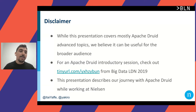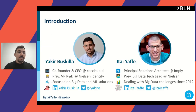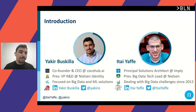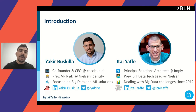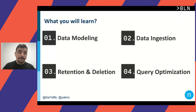This presentation mostly describes our journey with Apache Druid while Itai and I worked at Nielsen. My name is Akir — I'm currently co-founder and CEO at CocoAB AI, and previously I led the Nielsen Identity group at Nielsen, mainly focusing on big data and machine learning solutions. With me today is Itai, who is currently a principal solutions architect at Imply and previously was big data tech lead at Nielsen, leading our big data group technology.